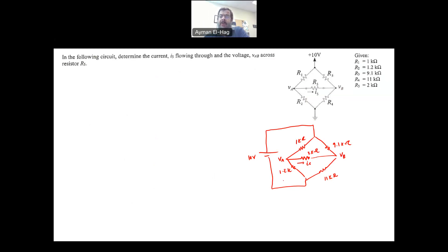We'll use nodal analysis. This node is ground, so this is V equal to zero. This is the node connected to the supply, so this is equal to 10 volts. So we have only two unknowns, so we need two equations.